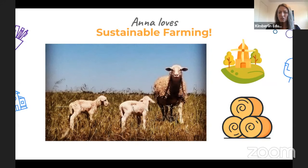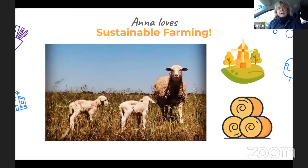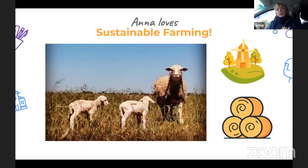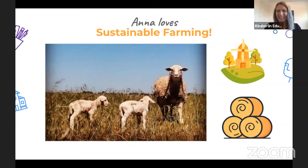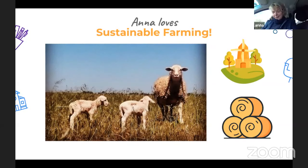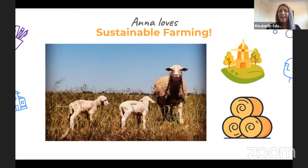You chose Dorper sheep specifically as part of your sustainable farming plan — why was that? They're from a very similar climate to what I've got; they're actually from Africa and were developed to grow muscle. Dorper sheep actually grow more of a hair coat and they shed it like we do. They put all of their energy into having babies or lambs and growing meat. You don't shear your sheep then? No — occasionally if they're looking a little untidy I might shear them a bit, but they tend to rub their fleece off on trees and fences.